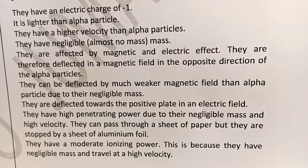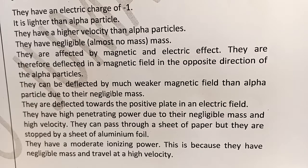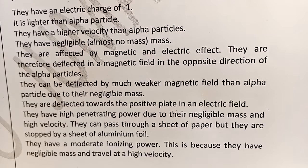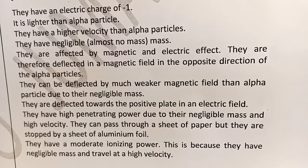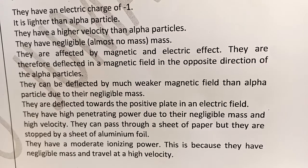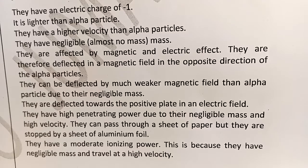Beta particles are deflected in the opposite direction to alpha particles because alpha has a positive charge while beta has a negative charge. Beta particles have higher penetrating power due to their negligible mass and high velocity compared to alpha — they can pass through a sheet of paper but are stopped by a sheet of aluminium foil.